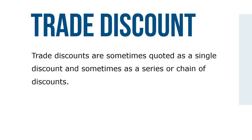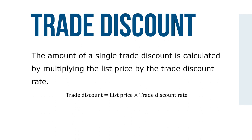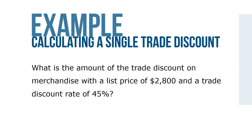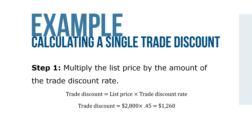Trade discounts are sometimes quoted as a single discount and sometimes as a series or chain of discounts. The number of discounts is dependent on the extent to which marketing service is performed by the channel members. The amount of a single trade discount is calculated by multiplying the list price by the trade discount rate: trade discount equals list price times trade discount rate. For example, what is the amount of a trade discount on merchandise with a list price of $2,800 and a trade discount rate of 45%? Multiply the list price by the trade discount rate: $2,800 times 0.45 equals $1,260.